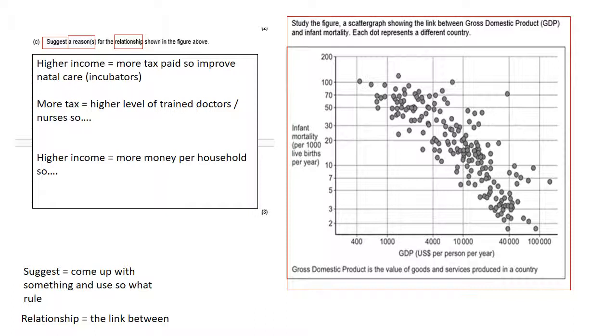The second one, another way of doing it: more tax means that the government has more money to invest in the training of doctors and nurses. So therefore, they're more likely to spot any issues for concern or causes of concern with young babies. And as a result, they're more likely to act upon that, and therefore less babies would die.